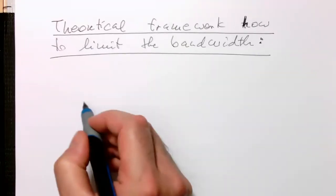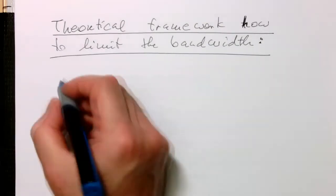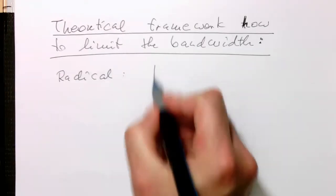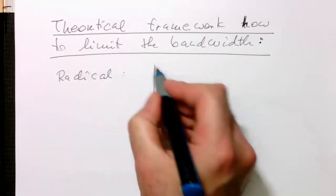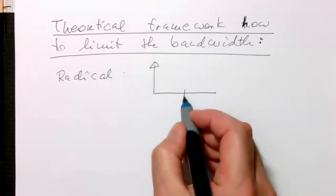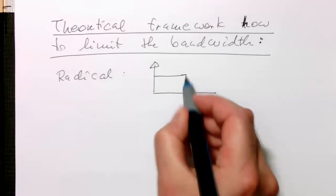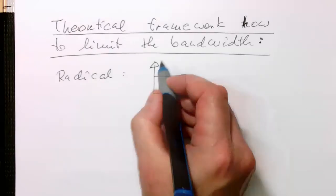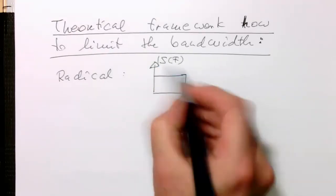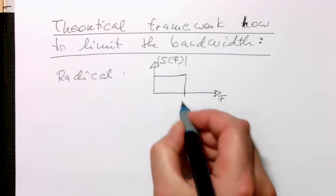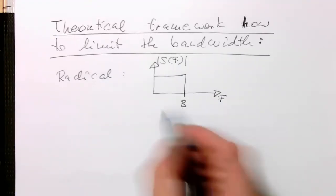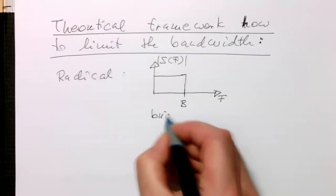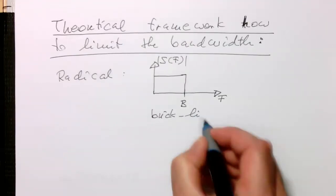And so we start with the idea that we're being quite radical. And we say, okay, we just define our bandwidth as a brick. So that's here, our baseband. So that's frequency. And this is here, S of F. So that's our bandwidth here. And this is B. So with that, we are creating our brick-like bandwidth.